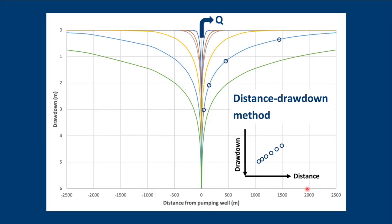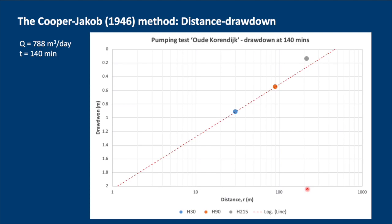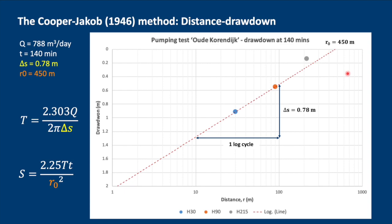Let's have a look at the distance-drawdown method. As I mentioned before we have three piezometers at 30, 90, and 215 meters, but actually in this example where we are looking at the drawdown after 140 minutes they don't all plot on a straight line. The reason for this is that in this furthest away piezometer U is probably still too high so it doesn't apply to use the Cooper-Jacob method for this observation well. We can look at the change in drawdown over one log cycle and use that to calculate the transmissivity, and we can also find out what is r0, the edge of the cone of depression where the drawdown will be zero. It's about 450 meters and that is then used to calculate storativity.